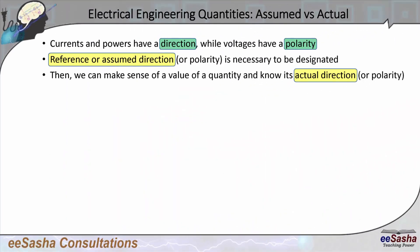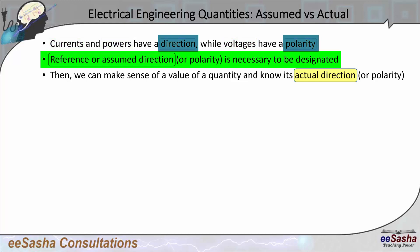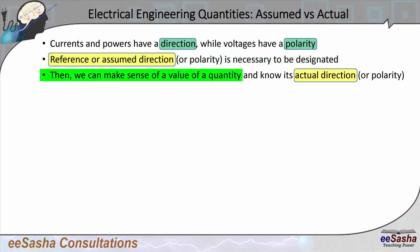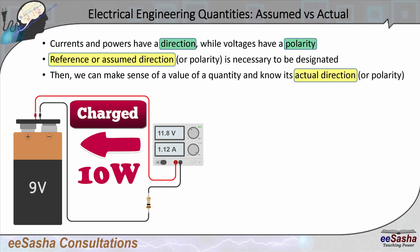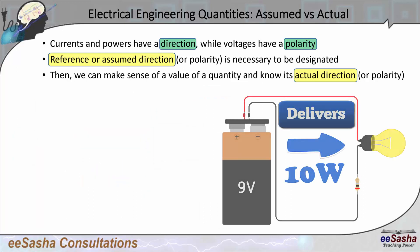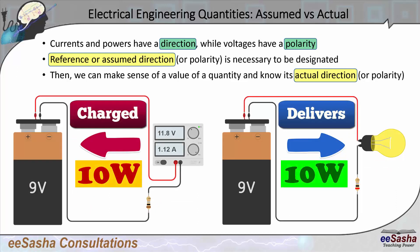Exactly the same happens with currents, voltages, and powers. You assume a certain direction or polarity, and that determines how the positive or negative value that follows is interpreted. A positive value by itself means nothing; a negative value by itself means nothing. If I tell you the battery power flow is 10 watts — 10 watts in which direction? I didn't say direction. So I have to say 'battery is being charged with 10 watts' or 'battery delivers 10 watts.' Along with the value being positive or negative, I have to state what the assumed direction is — then things make sense. Without an assumed direction, the number itself doesn't make sense.